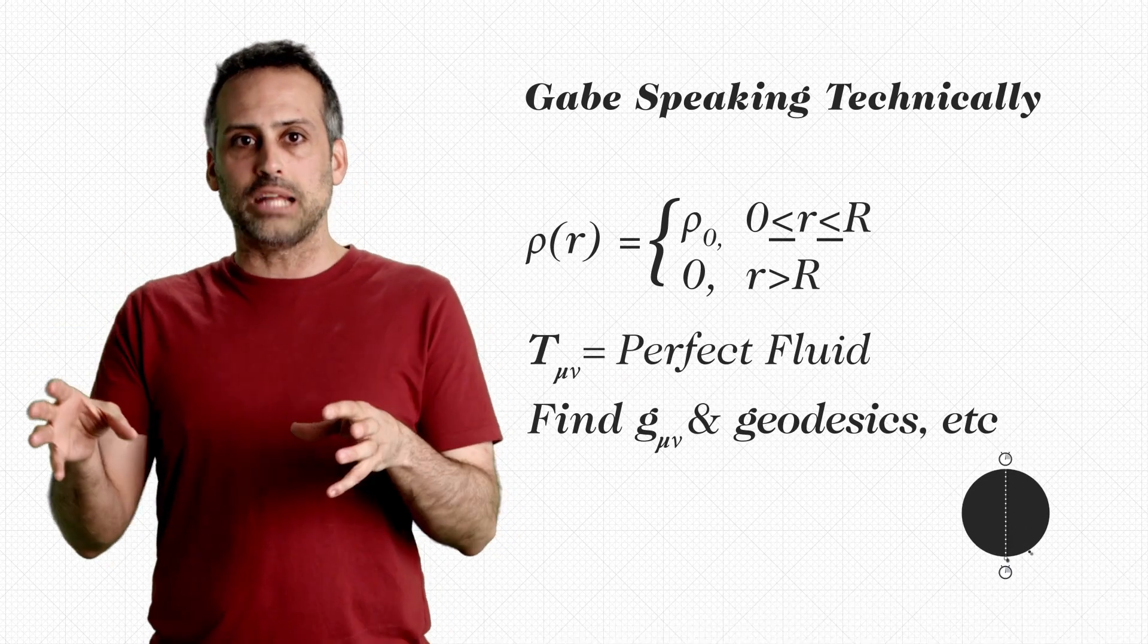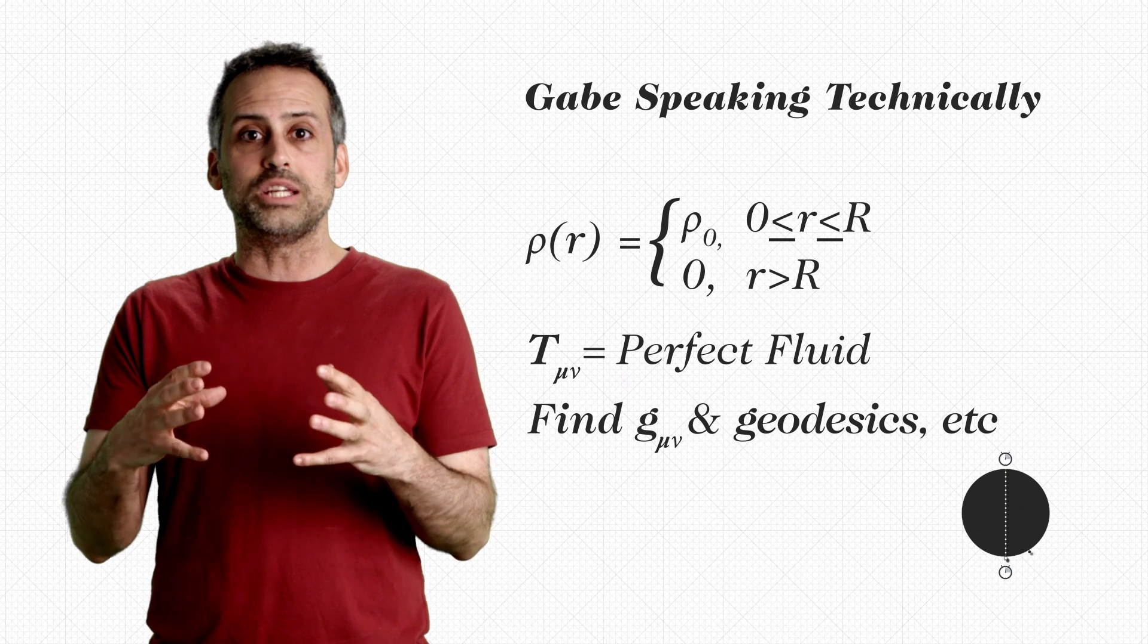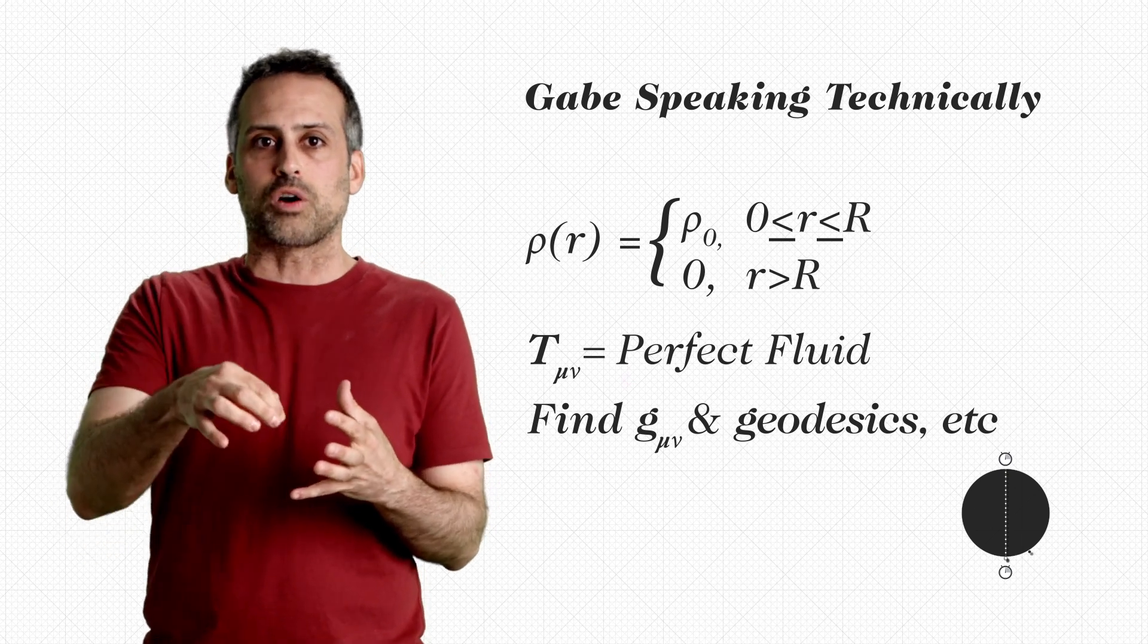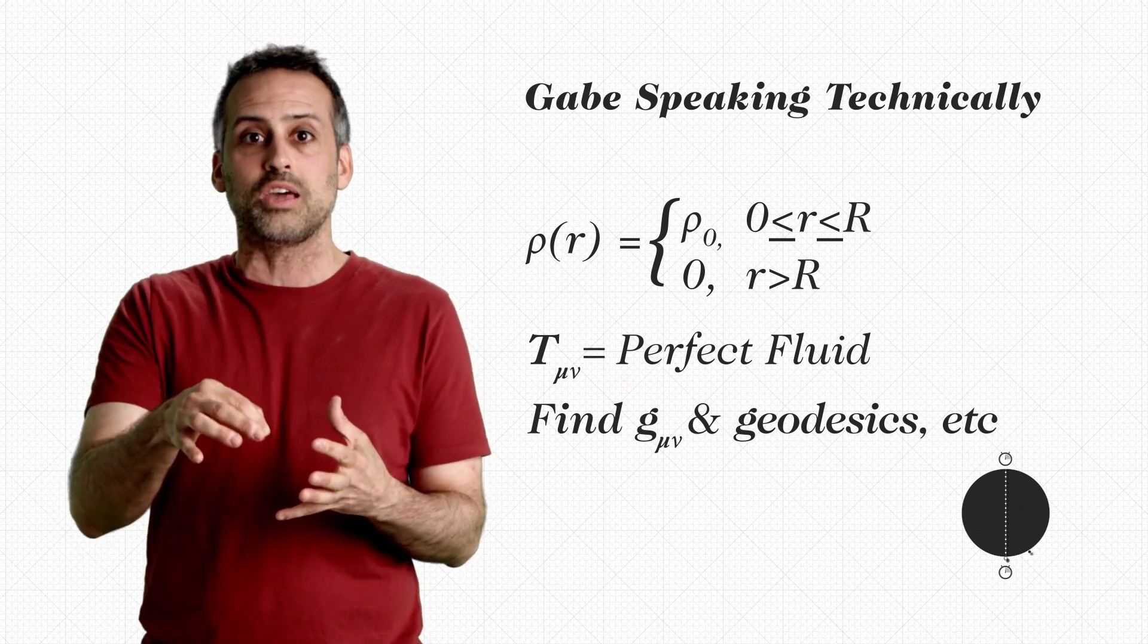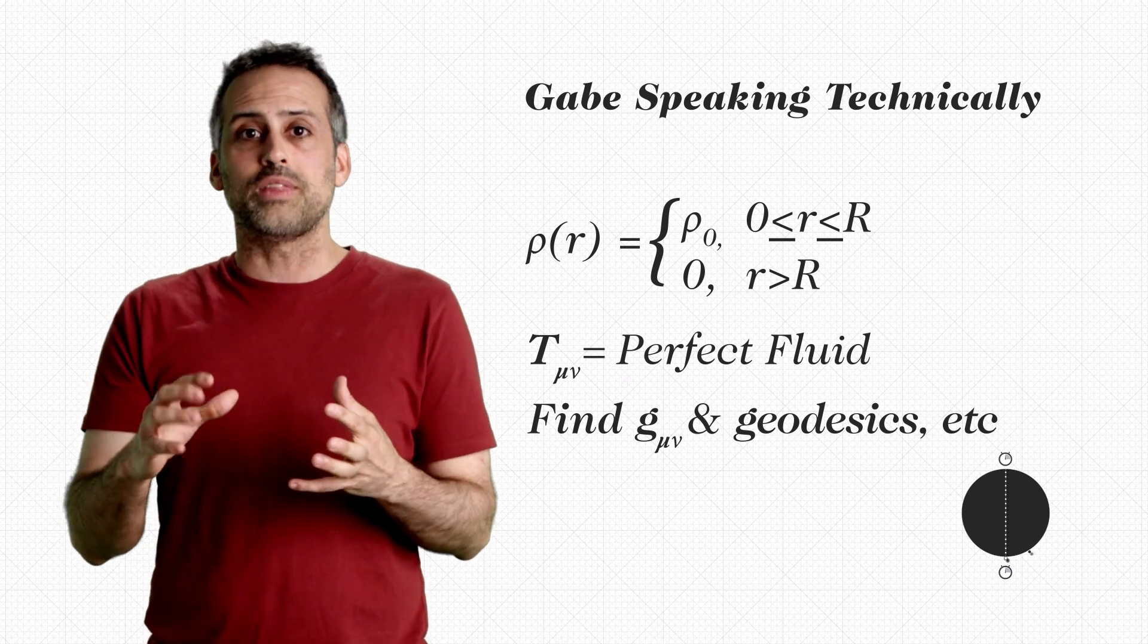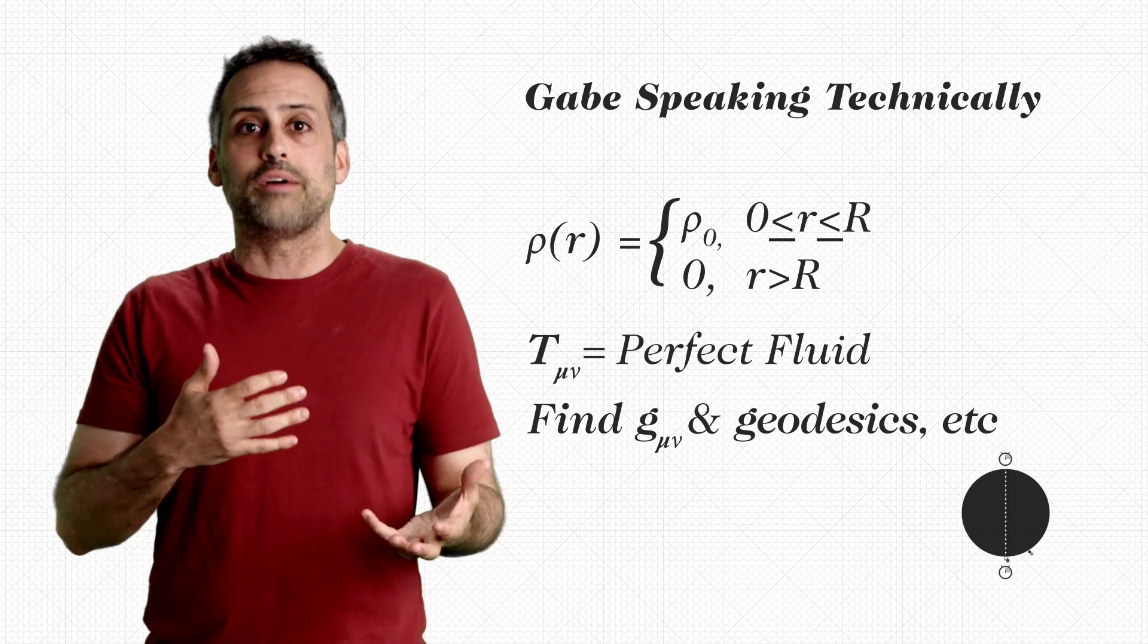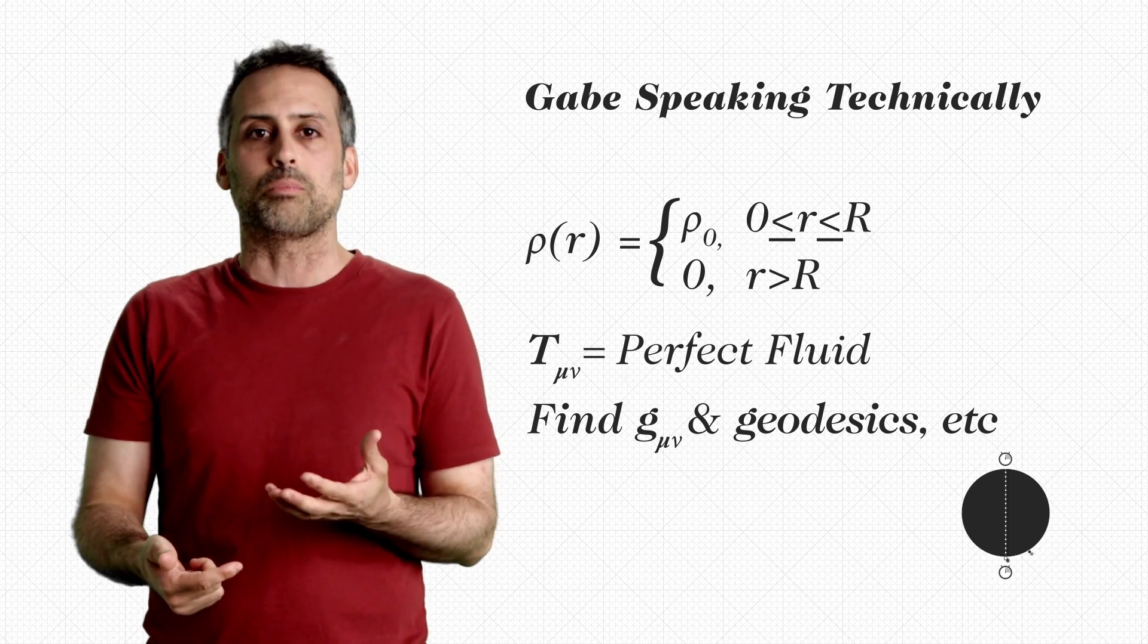You have to solve the Einstein equations in the presence of a spherically symmetric perfect fluid whose energy density is the same when measured locally by an observer that's instantaneously at rest at any location in that fluid. OK. Once you find the metric, you can then find the circular geodesics and the radial geodesics, and work out who arrives first according to the clock on the other side of the planet.